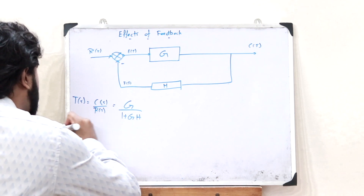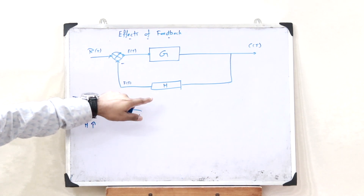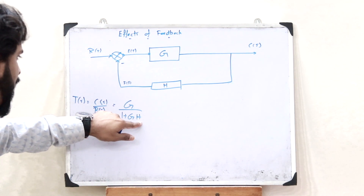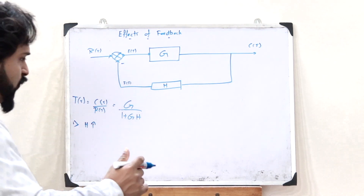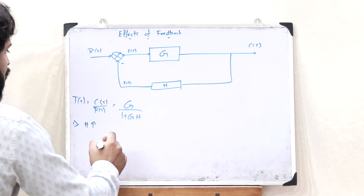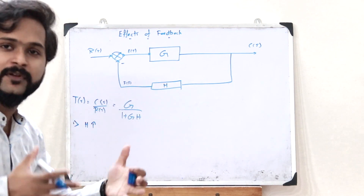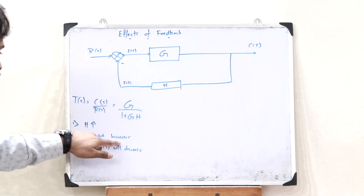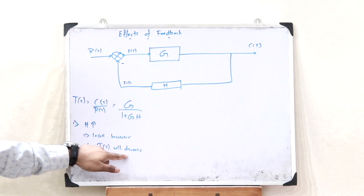In the first case, let us slowly increase the negative feedback by increasing the value of H. When H increases, the denominator 1 plus GH also increases. Therefore, as the denominator increases, the overall expression decreases. So as H increases, the overall effective gain T(s) decreases.